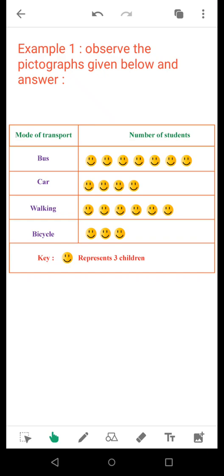Now, suppose this is the pictograph for a certain question. You have been asked, observe the pictograph given below and answer. See that there are many smileys and here on the left hand side there is a column which denotes the modes of transport and this column denotes the number of students.